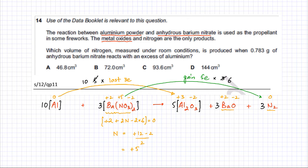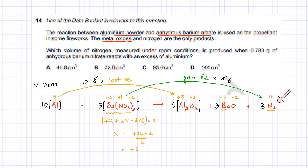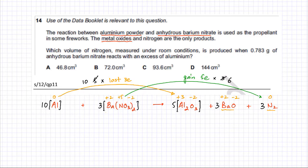The challenge of this question was first constructing a balanced equation. Since it's a redox reaction, you need to balance the number of electrons lost and the number of electrons gained, making them equal. Once this equation is balanced, the rest of the question is fairly easy — you need to find the volume of nitrogen produced.